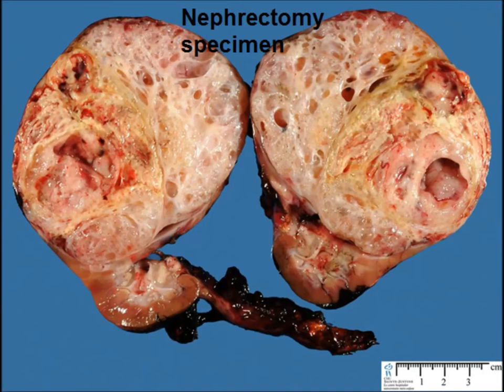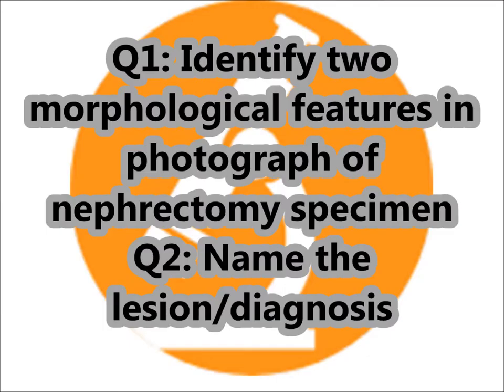The questions are: first, identify the morphological features in the given photograph of the nephrectomy specimen; and second, name the lesion or provide the diagnosis. Now if we carefully look at the photograph provided...